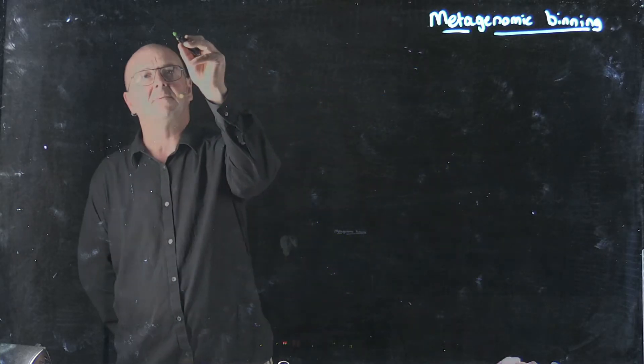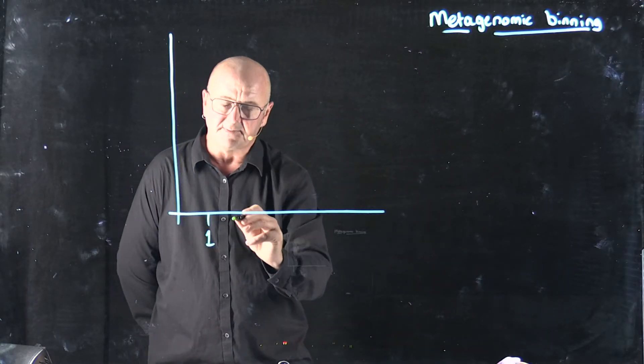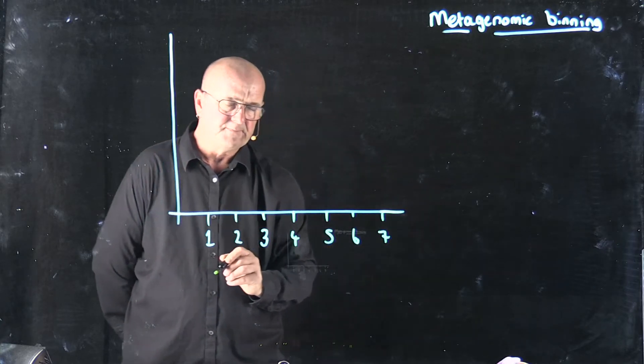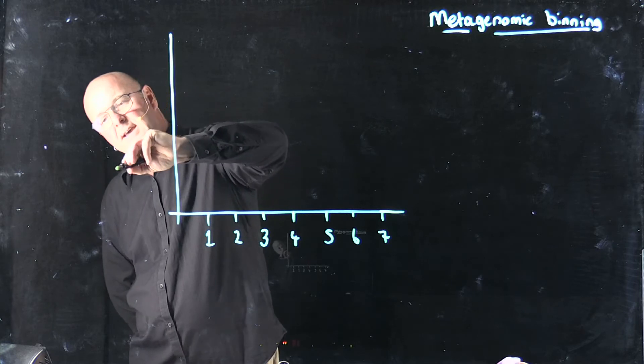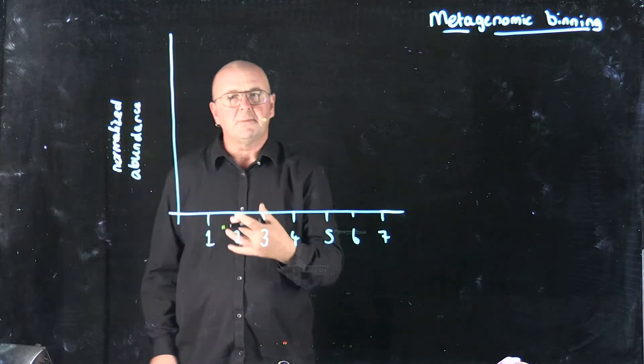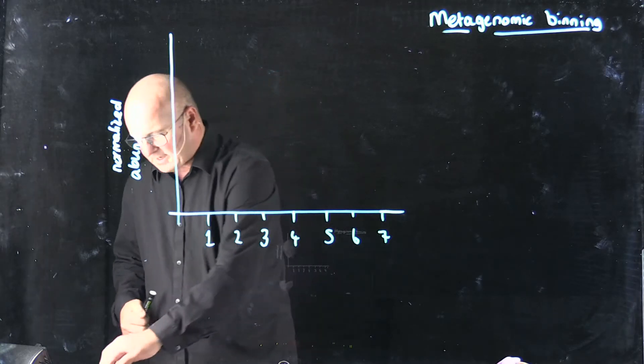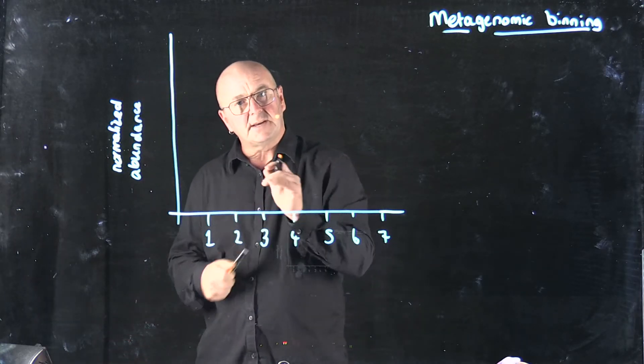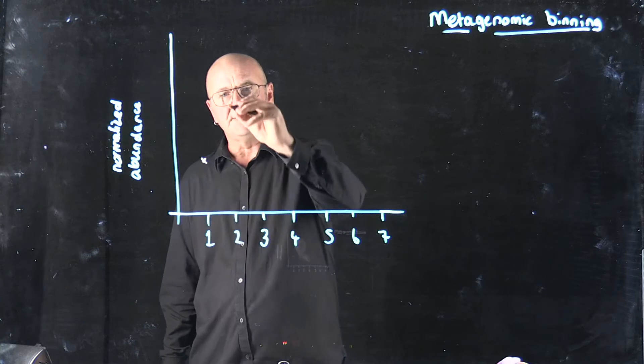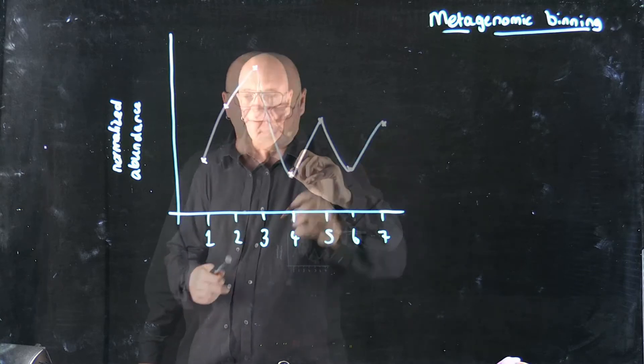And so we plot a graph where we have, on our x-axis, our different samples. So this is the sample from day one, day two, day three, et cetera. And on our y-axis, we have typically our normalized abundance, and we normalize it based on the length of the contigs. And so what we may find is that for a particular contig, on day one, its abundance is here. On day two, it's a little bit more abundant. On day three, it's even more. On day four, it's much less.